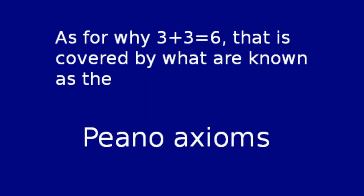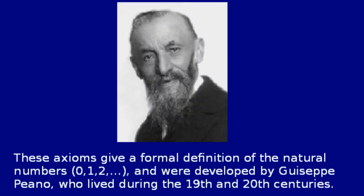not divine inspiration. As for why 3 plus 3 equals 6, that is covered by what are known as the Peano axioms. These axioms give a formal definition of the natural numbers, that is, 1, 2, and so on, and were developed by Giuseppe Peano, who lived during the 19th and 20th centuries.